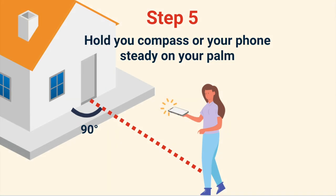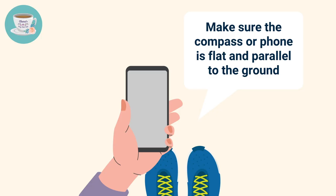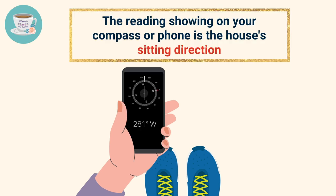Step five: hold your compass or your phone steady on your palm, and make sure the compass or the phone is flat and parallel to the ground. The reading showing on your compass or phone is the house's sitting direction.